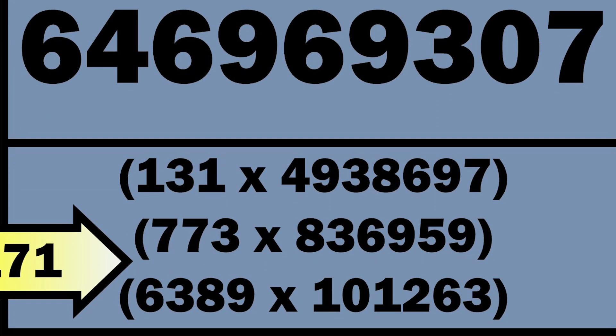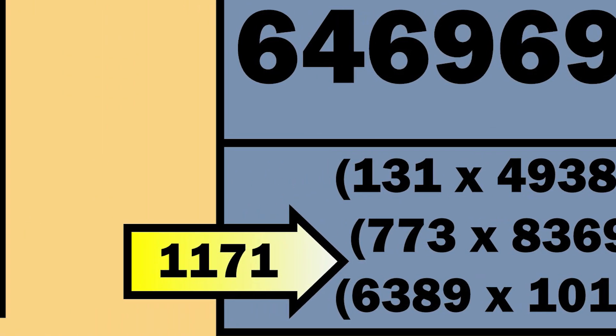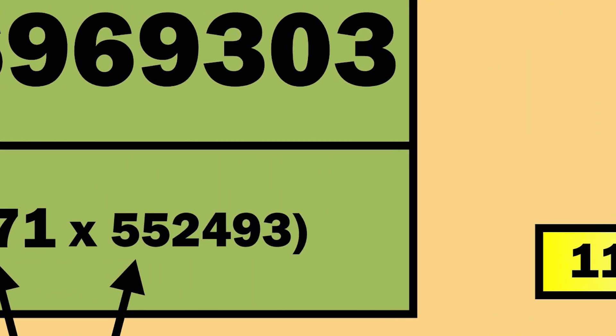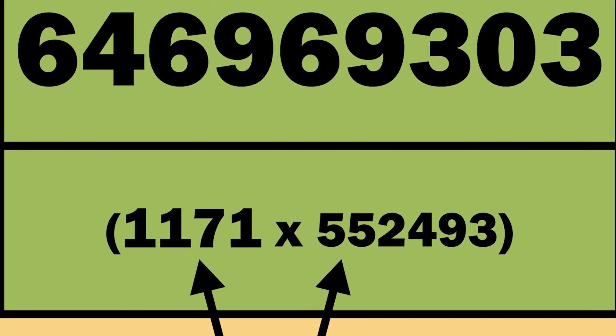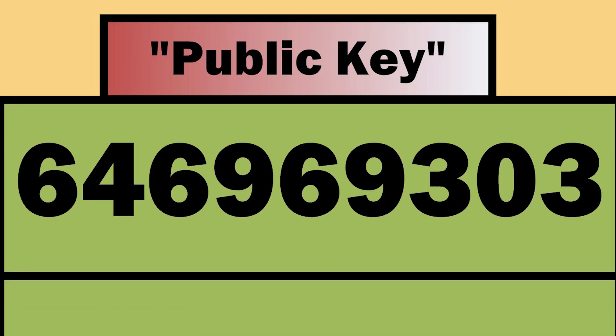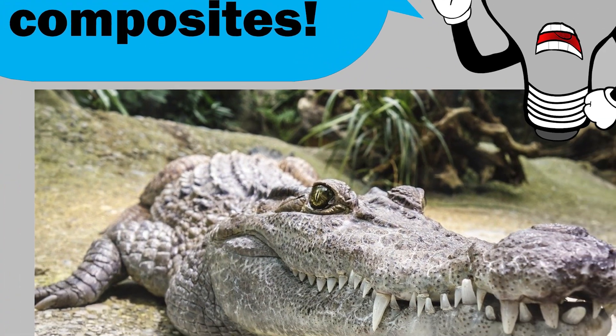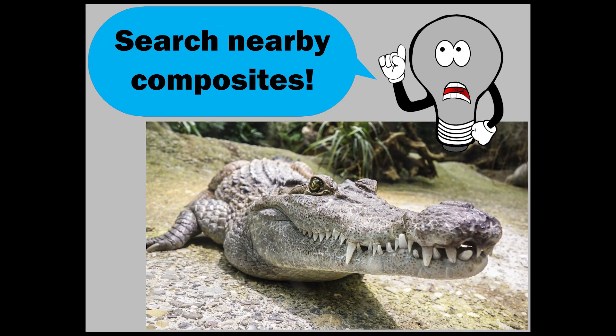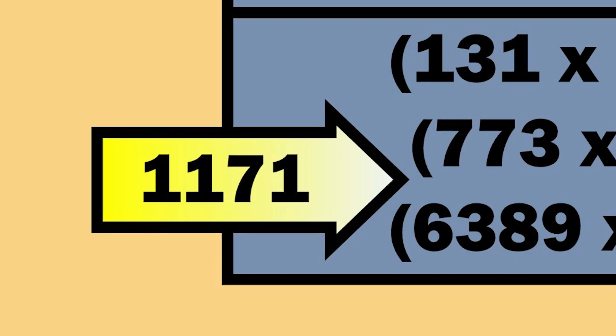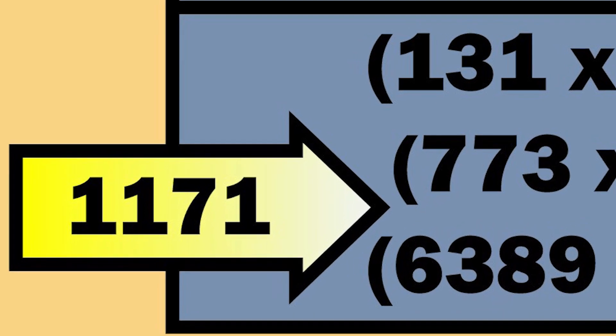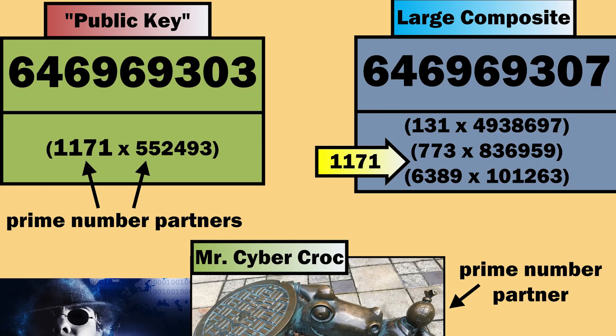The large composite was 646969307, and it was a close neighbor to 646969303, a relatively small public key. As the story goes, Mr. Cyber Croc got the brilliant idea to search for primes between the smallest of the factor pairs of the nearby composite.